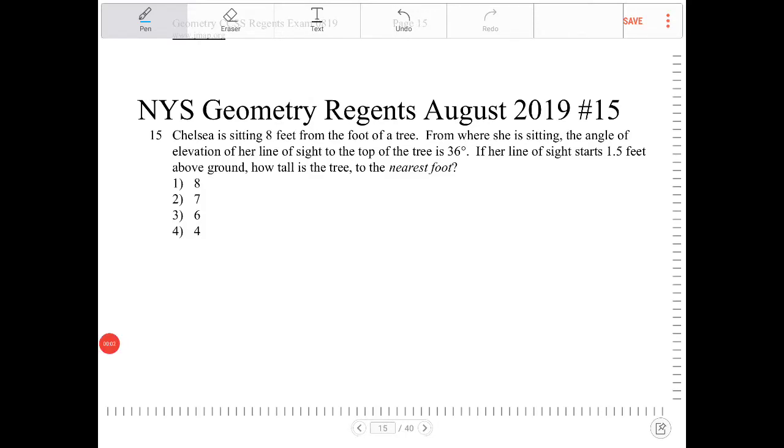Chelsea is sitting 8 feet from the foot of a tree. From where she is sitting, the angle of elevation of her line of sight to the top of the tree is 36 degrees. So let's draw the situation.